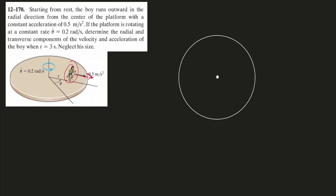The question says starting from rest, the boy runs outwards in the radial direction from the center of the platform with a constant acceleration of 0.5. We have to be very careful - this here is not his true acceleration.